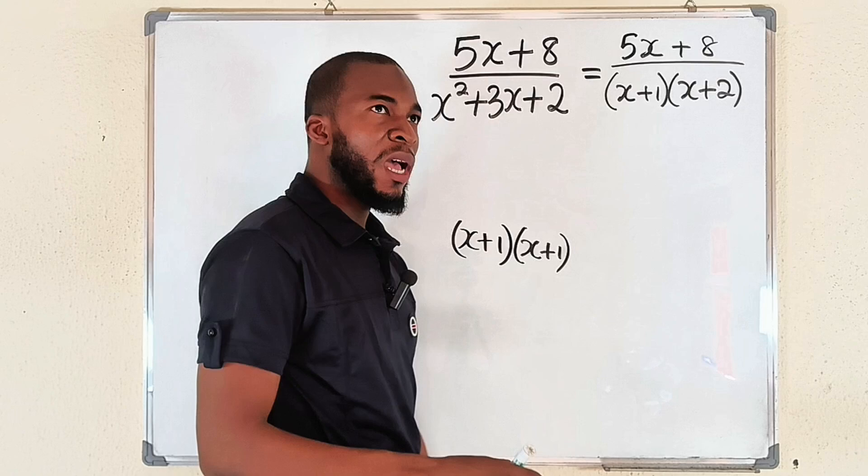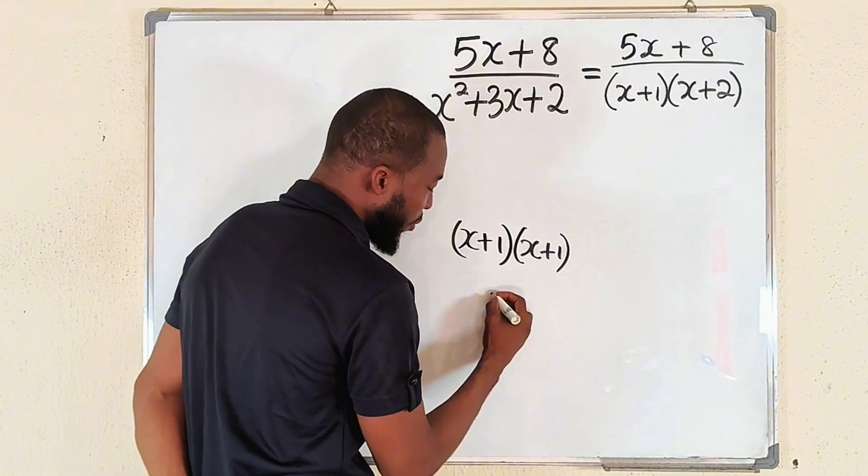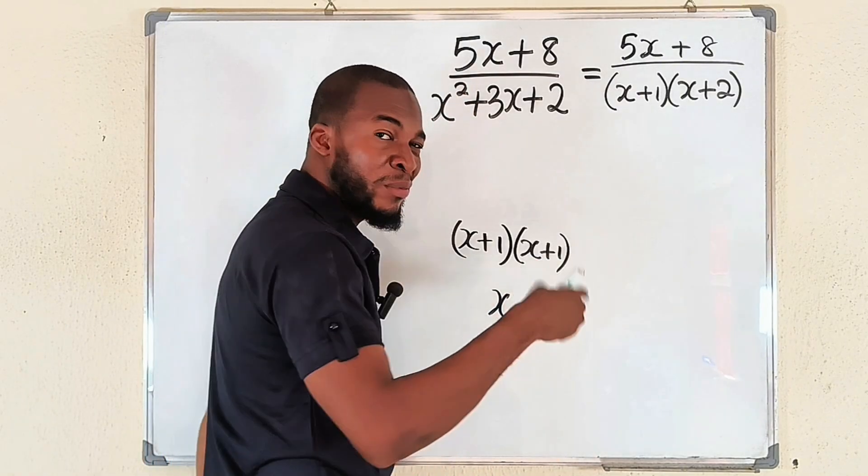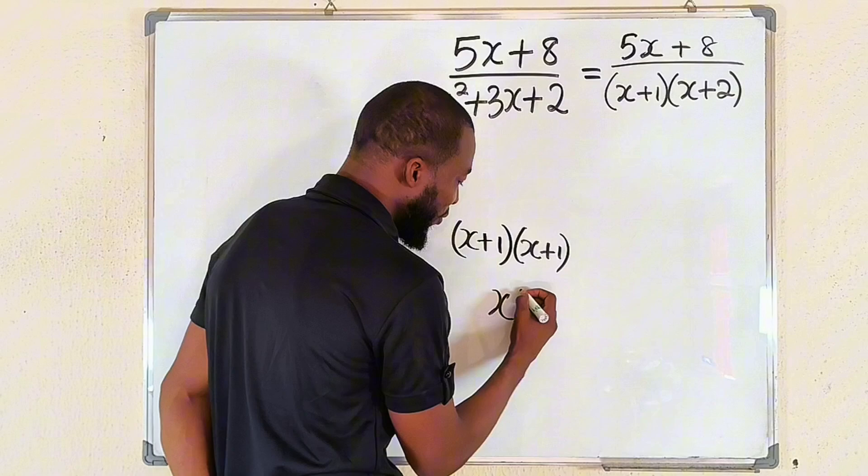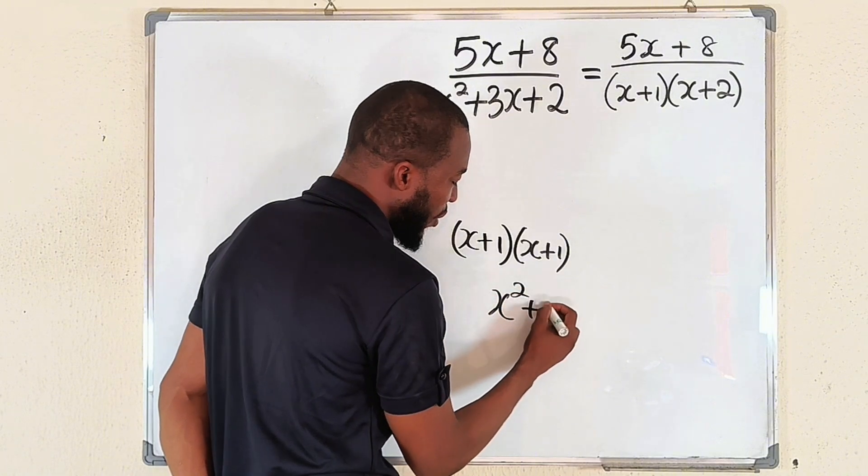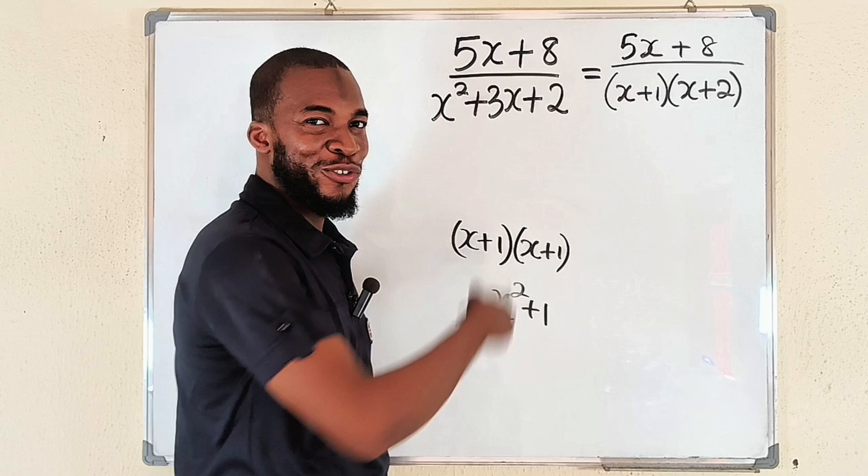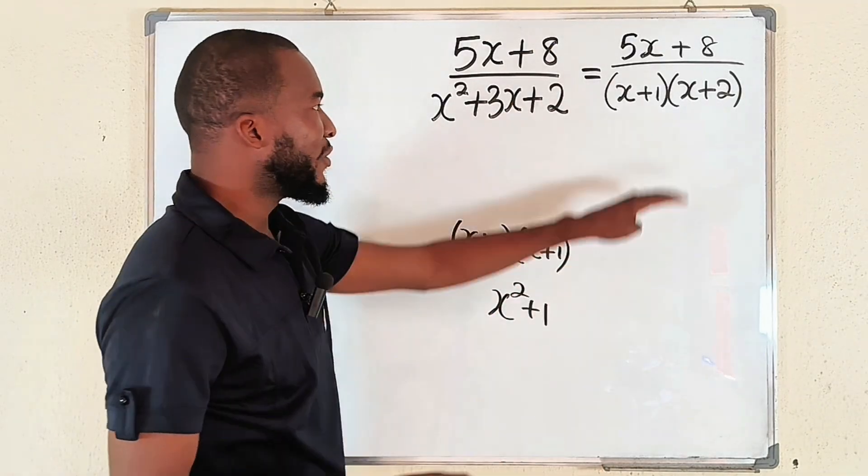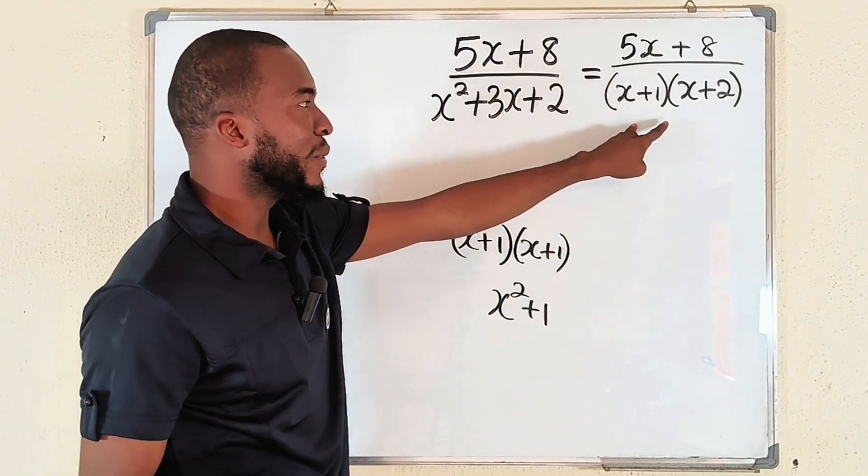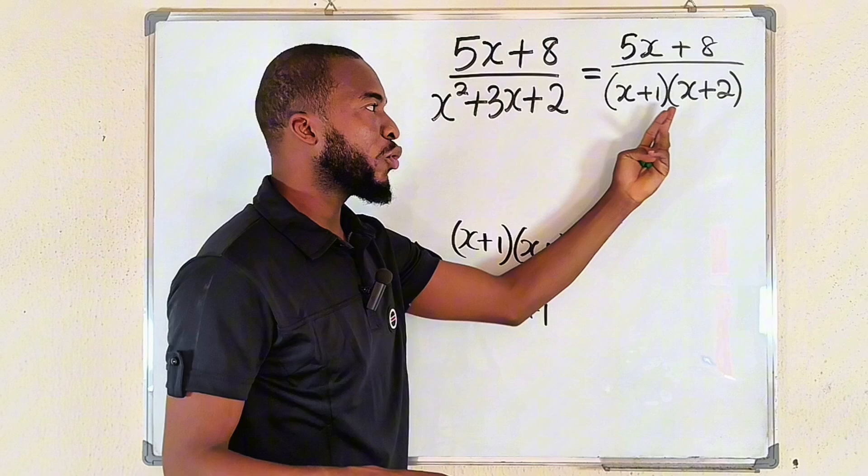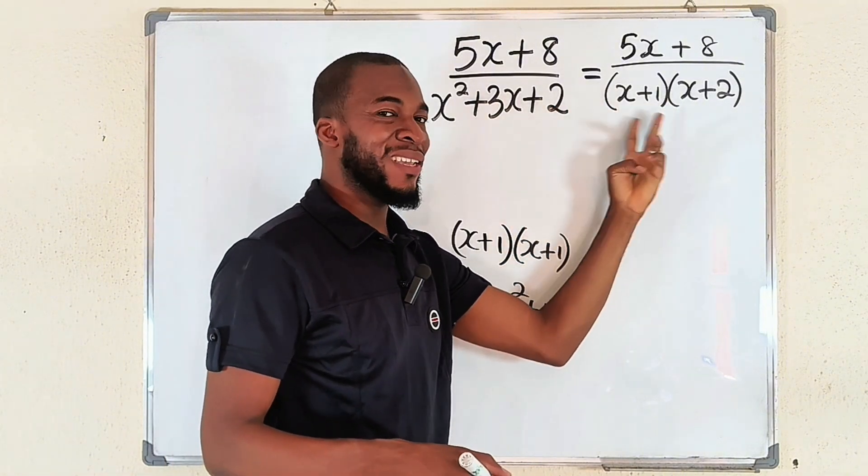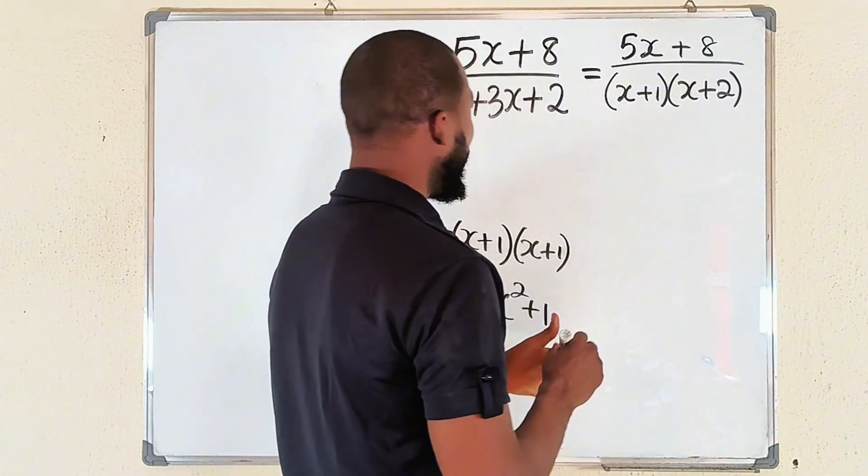And also do not use cover-up method when you have an irreducible quadratic factor like x squared plus 1. You cannot factorize it unless you're going to the complex world. So always apply cover-up method once you have a product of two distinct linear factors. Let me show you how to apply the cover-up method.